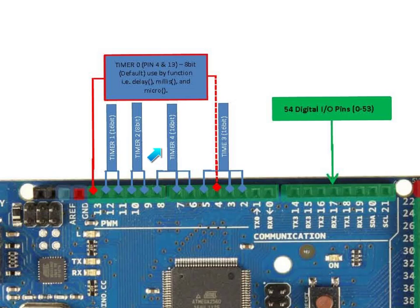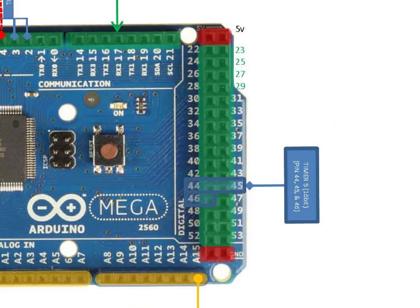Next is Timer 4, having a 16-bit resolution, which utilizes pin 6, pin 7, and pin 8. Like Timer 3, Timer 4 is also free from default functions in the Arduino software library. Next is Timer 5, which has a 16-bit resolution and utilizes pin 44, pin 45, and pin 46. Timer 5, like Timers 3 and 4, is free from any default functions in the Arduino software library.